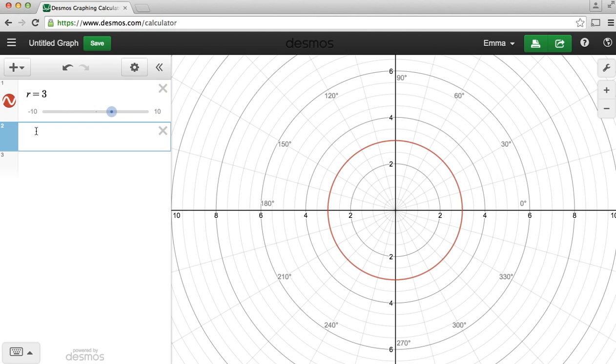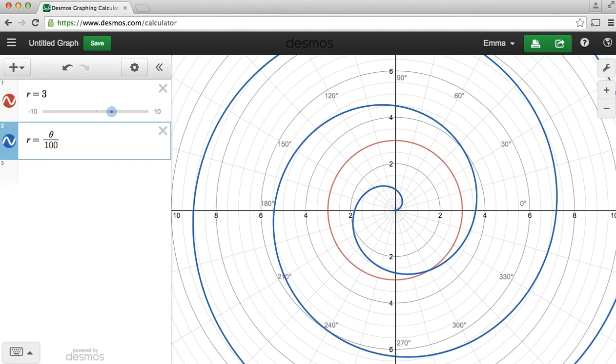So for example we could draw r equals theta divided by 100, which created a spiral for us that started at the origin and worked its way out.